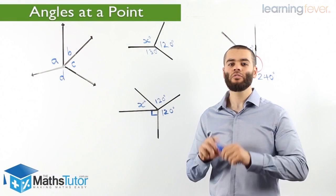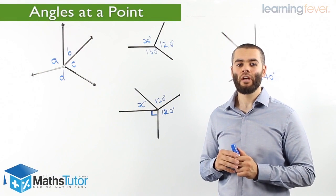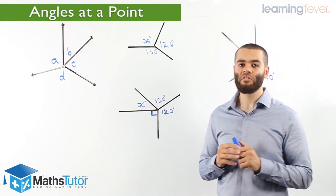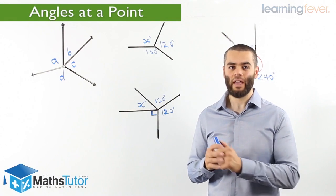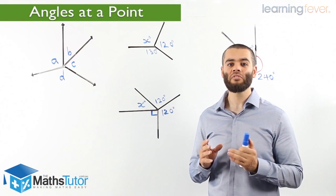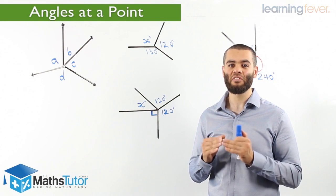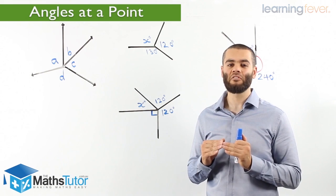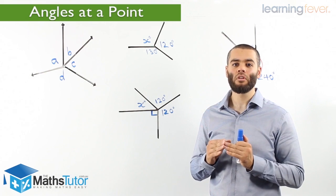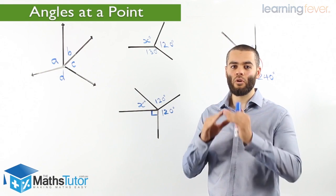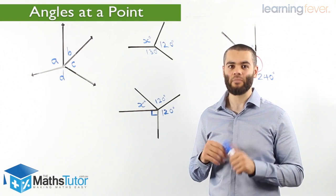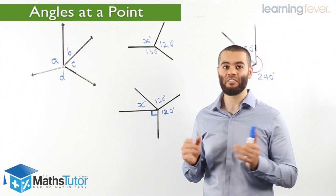Hey guys, today I'm going to show you how to solve angles that are missing using angles at a point. Angles at a point, as the name suggests, are angles that meet at a certain point. The vertices all meet at a certain point and they make a full circle or a full turn when we add the angles together, and they add up to 360 degrees.